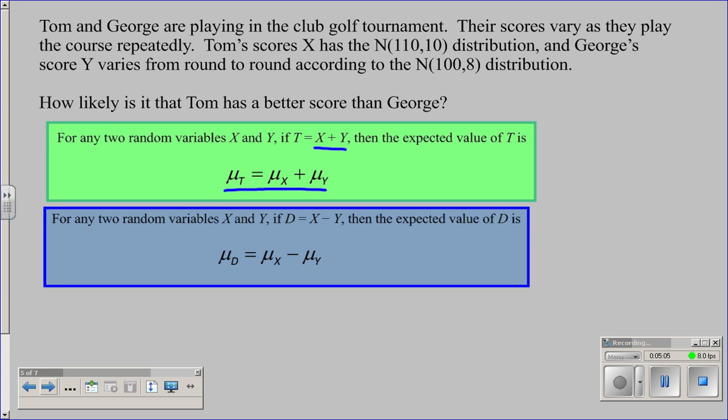What if we're subtracting? If we're subtracting, then we can subtract the means. If you think about these rules, they should make sense. Tom has a mean of 110, George has a mean of 100. On average, they are 10 strokes apart from each other. You're allowed to subtract means. That's probably the easier of the two things we're going to look at.